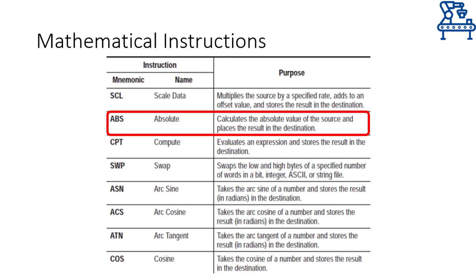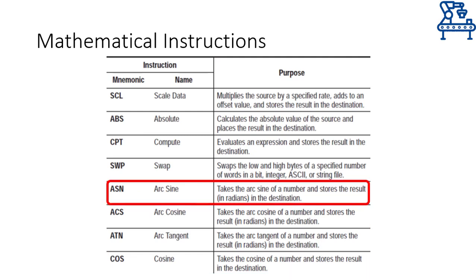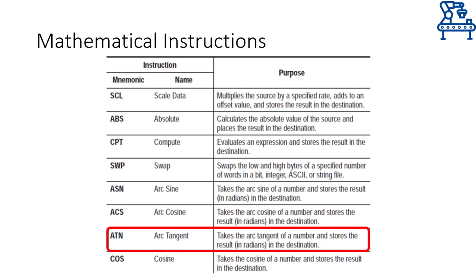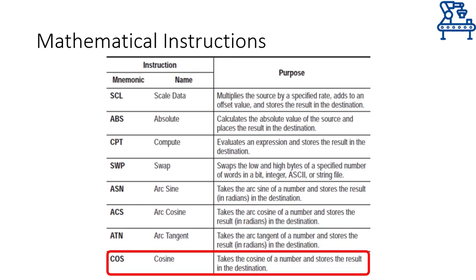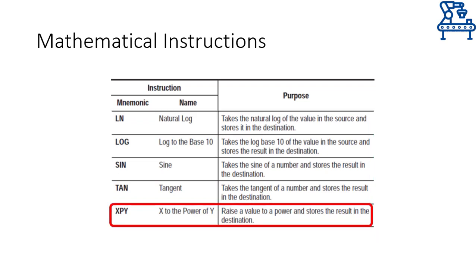The absolute instruction will calculate the absolute value of the source and place it in the destination, whereas the swap instruction will swap the low and high bytes of a specified number of words in any data file. There are also a few trigonometric operations that require one source, calculate its trigonometric result, and store the result in the destination address in radians. Arc sine calculates the sine inverse, arc cosine calculates the cosine inverse, arc tangent gives the inverse tangent, and the cosine instruction calculates the cosine of the given angle in radians. Additional instructions can calculate the natural log, log to base 10, sine, and tangent of the given source value, and the last instruction may be used to calculate x raised to the power of y, e.g., 4 raised to the power 3.